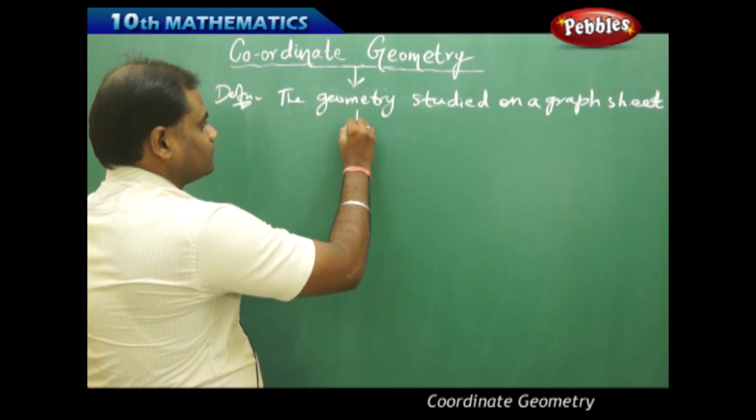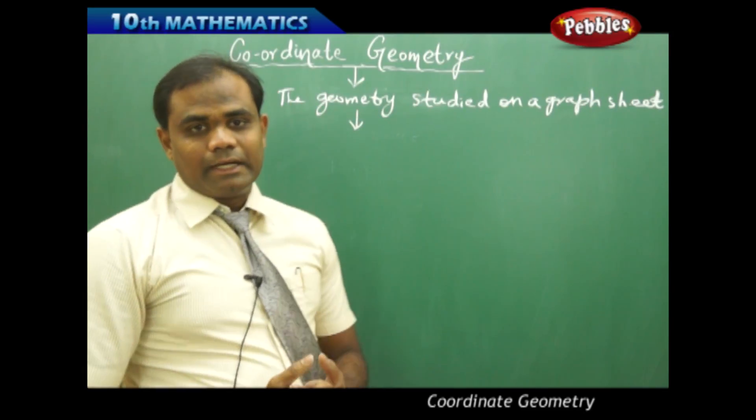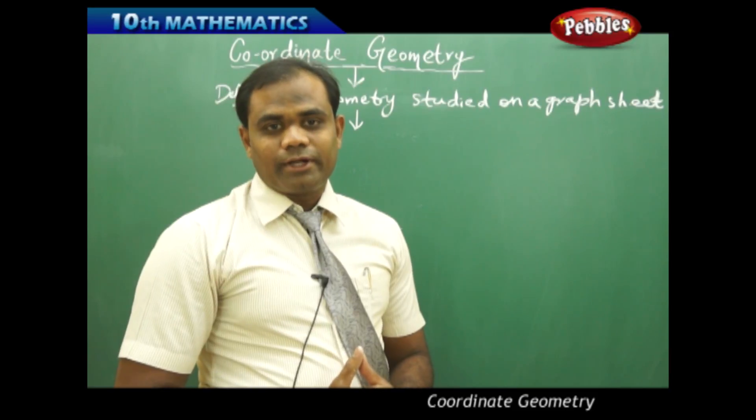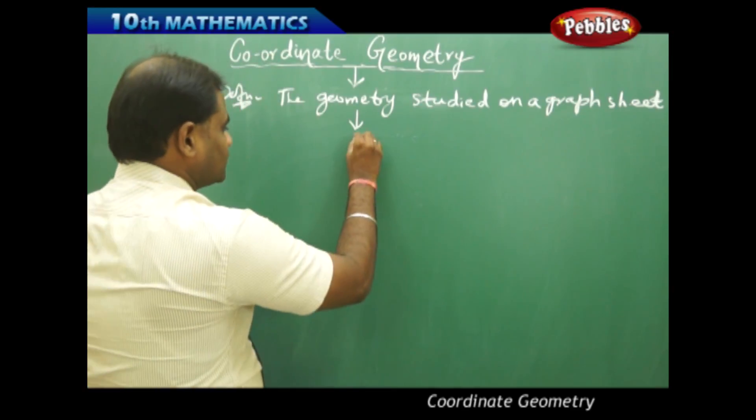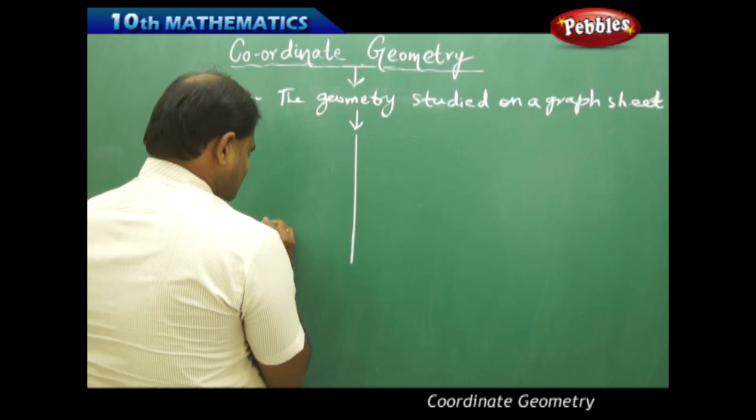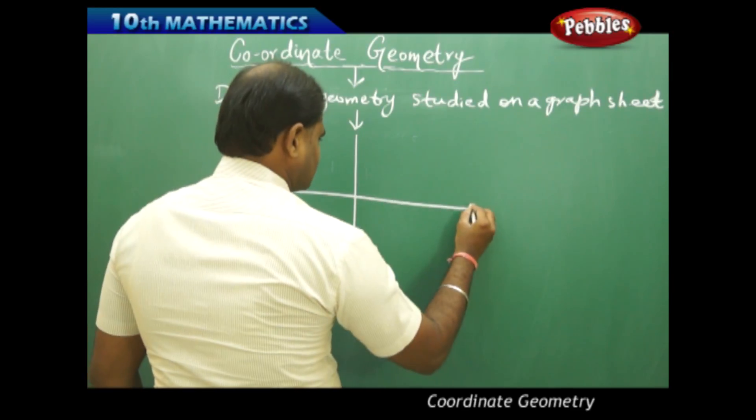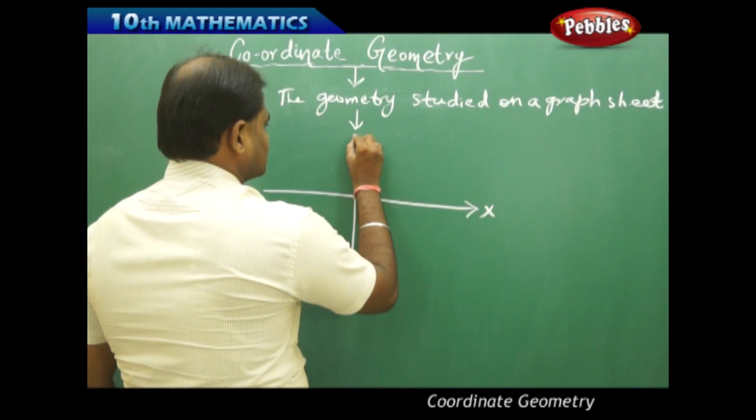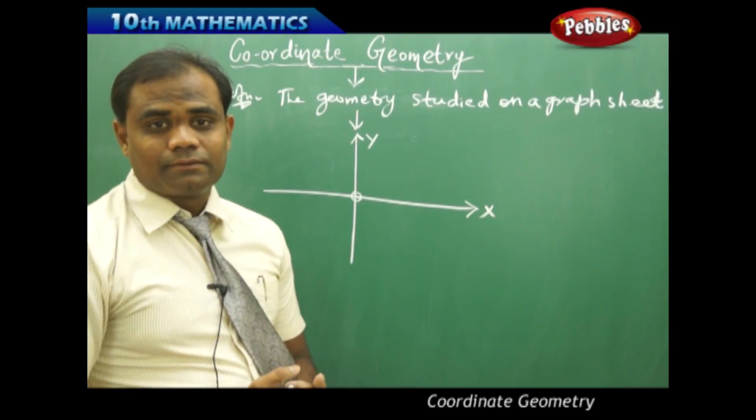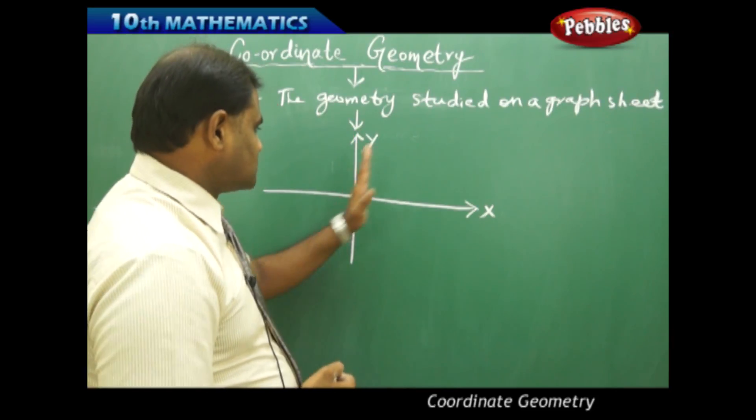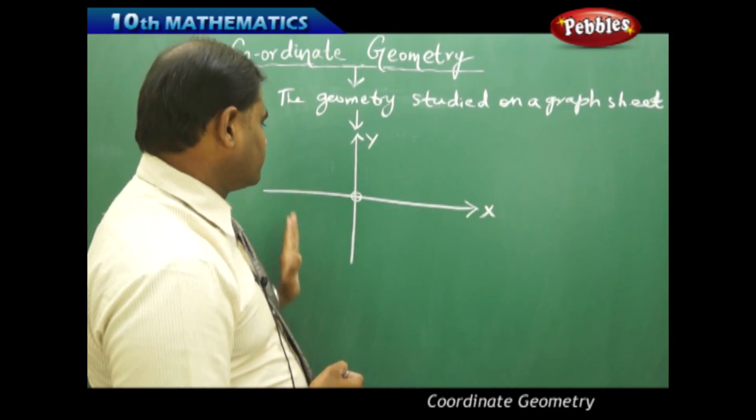Usually when I say coordinates, they are nothing but the points or the values associated with X and Y axis. So generally we take an X axis and a Y axis which intersect exactly perpendicular to each other. That is, the two axis divide the plane into four regions.